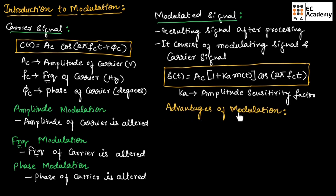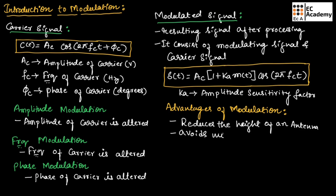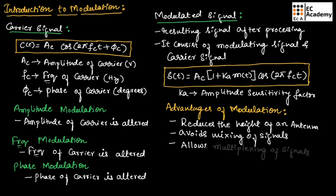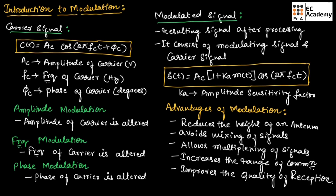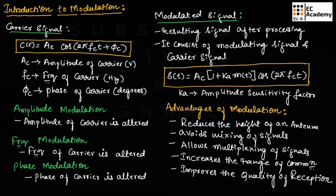The advantages of modulation are: it reduces the height of an antenna, it avoids mixing of signals, it allows the multiplexing of signals, it increases the range of communication, and it improves the quality of reception. This is the introduction to modulation — hope you have understood the topic. Thank you.